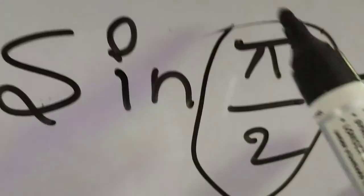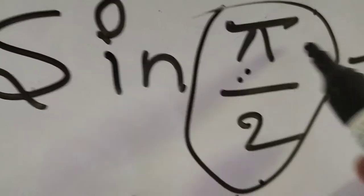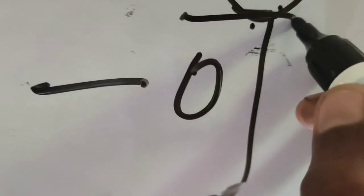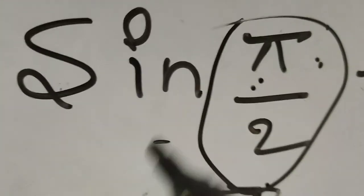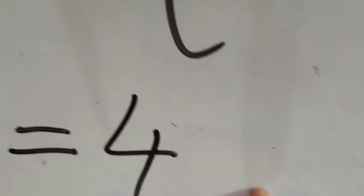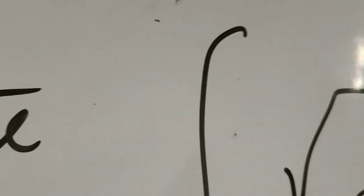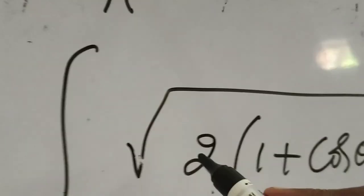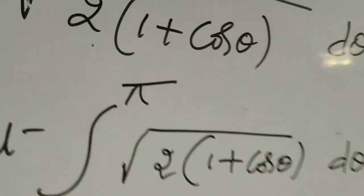That implies 4 into sin(π/2) minus sin(0). Now sin(π/2) means sin 90°, since π = 180° and 180/2 = 90°, so sin 90° = 1. And sin 0° = 0. Therefore the answer equals 4. This is the answer to the given integral from 0 to π of √(2(1 + cosθ)) dθ. Thank you.